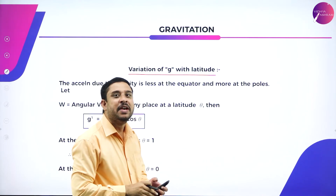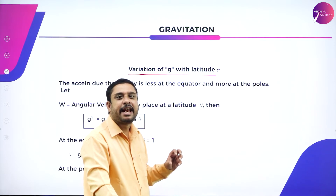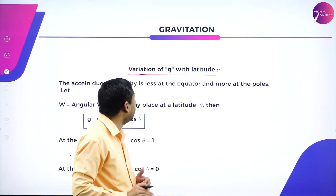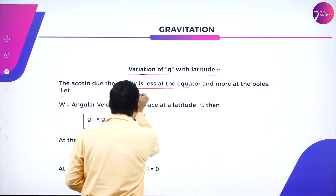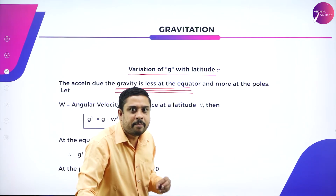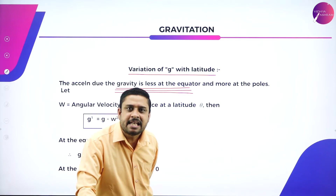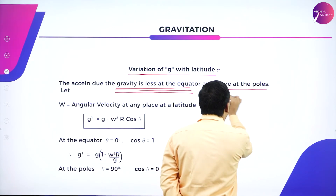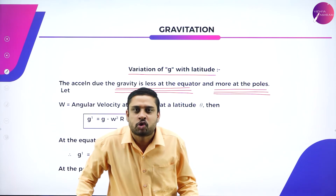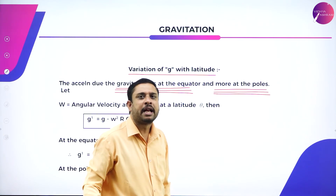Variation of g with latitude. How does acceleration due to gravity vary with latitude? Acceleration due to gravity is less at the equator and more at the poles. Always remember: the value of acceleration due to gravity is less at the equator and more at the poles.